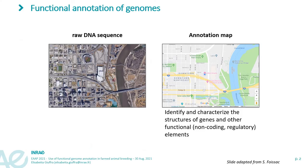The process of annotating genomes can be exemplified by Google Maps views. Compared to the left, the right panel contains specific indications to find places such as roads, squares and parks. Building reference annotation maps of genomes implies identifying and characterizing the structures of genes and other functional non-coding regulatory elements.